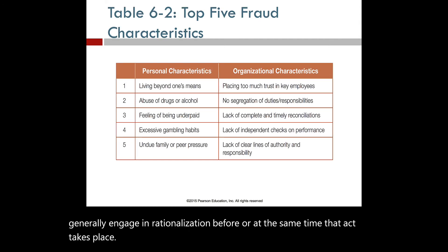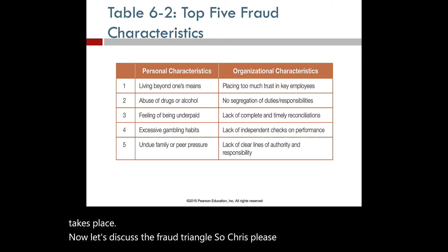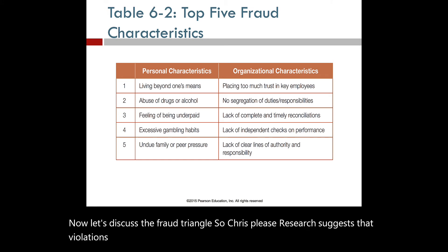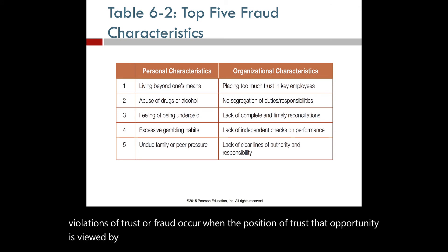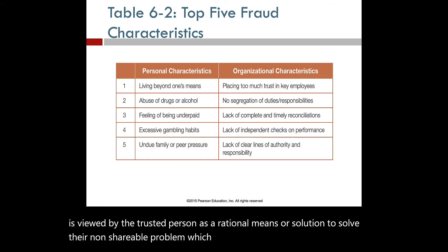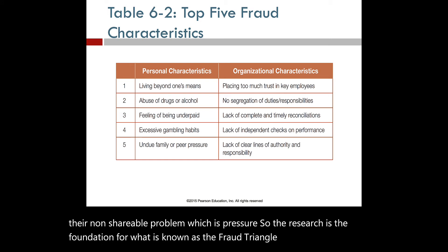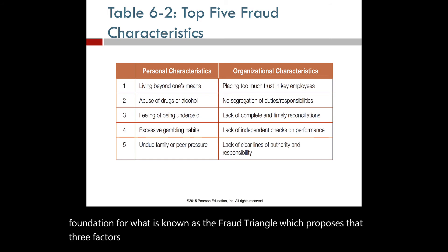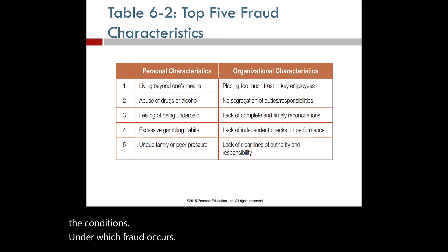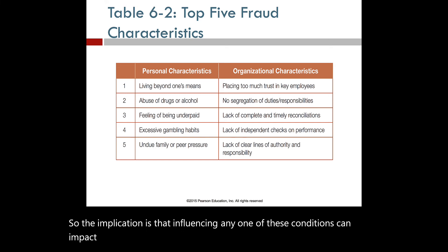Now let's discuss the fraud triangle. Cressey's research suggests that violations of trust or fraud occur when the position of trust — that opportunity — is viewed by the trusted person as a rational means or solution to solve their non-shareable problem, which is pressure. This research is the foundation for what is known as the fraud triangle, which proposes that three factors — pressure or need, opportunity, and rationalization — constitute the conditions under which fraud occurs. The implication is that influencing any one of these conditions can impact the likelihood that fraud would occur.